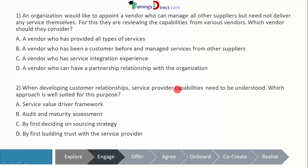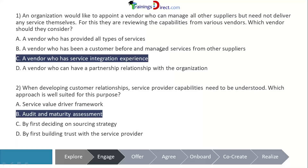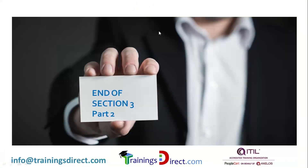Deciding the sourcing strategy doesn't provide an understanding of the provider capabilities, and building trust with the service provider need not provide an understanding of the provider capabilities. Therefore the answer is B. So we've got C and B as the correct answers. That brings us to the end of this section 3 part 2, the Engage step.